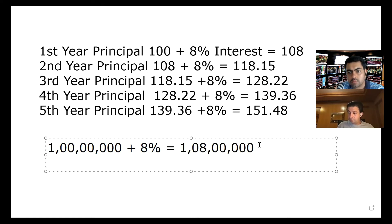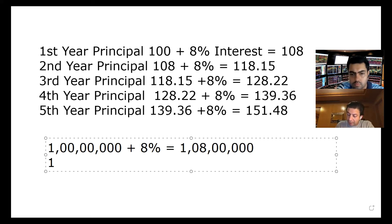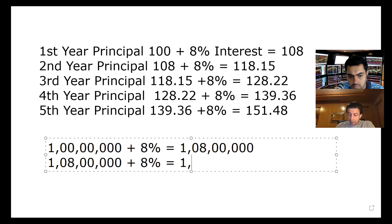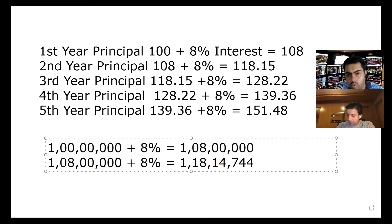Next year: 1 crore 8 lakhs plus 8% gives 1 crore 16 lakhs — specifically 1,14,744. Then the third year: 1 crore 28 lakhs 42,113.